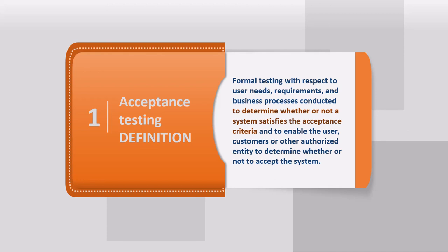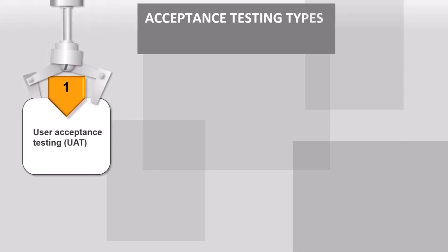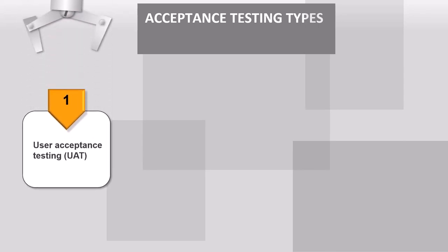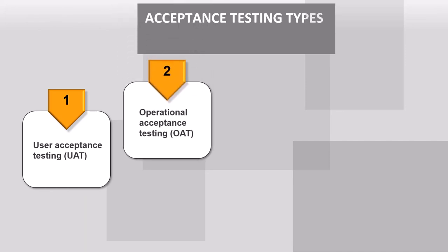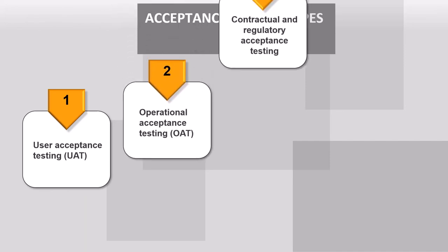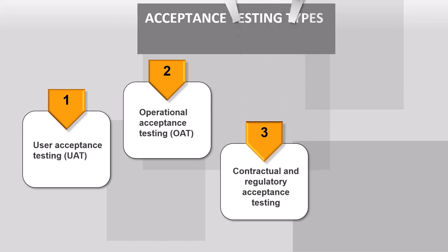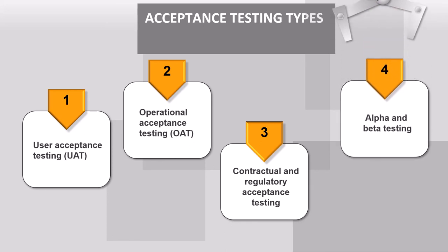There are different types of acceptance testing. In this course, we will learn about four types: the first is user acceptance testing, the second is operational acceptance testing, the third is contractual and regulatory acceptance testing, and the fourth is alpha and beta testing.